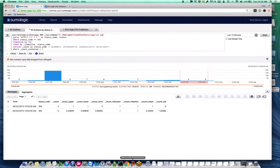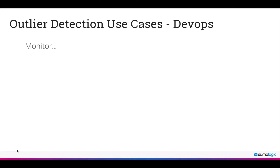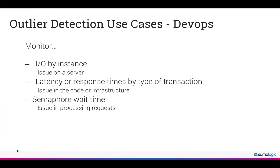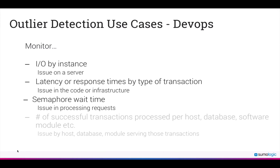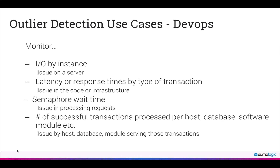There are many DevOps, IT Ops, and security and compliance use cases for outlier detection. For DevOps: you can detect issues on a server by monitoring input and output of events by each instance; find issues in code or infrastructure due to changes in latency or response times by each type of transaction; identify issues in processing requests by monitoring changes in semaphore wait times; and find issues by host, database, or module by monitoring the number of successful transactions.